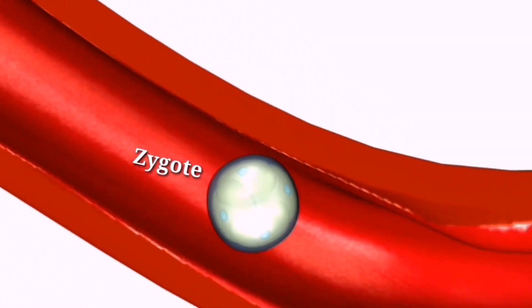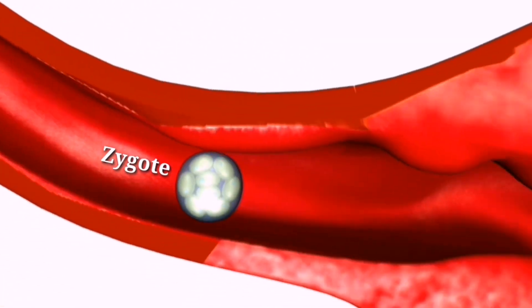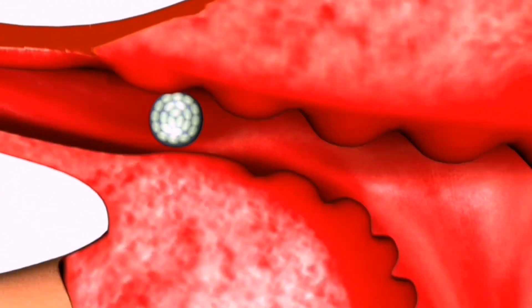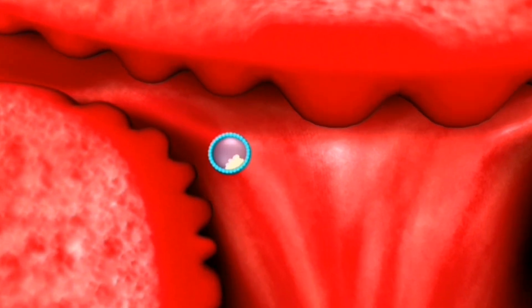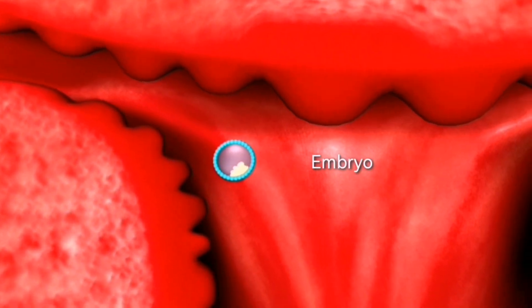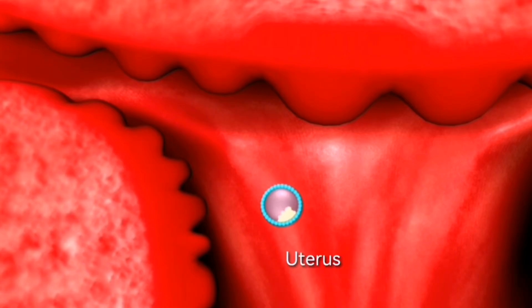After fertilization, the zygote starts to divide rapidly as it travels down the fallopian tube towards the uterus. It takes about three to four days for the zygote to reach the uterus.